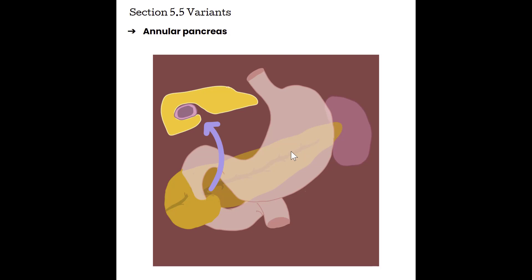In a normal pancreas, the head is just cradled within the C-loop. With the annular pancreas, instead of being cradled within that C-loop, the pancreatic tissue comes out and around and kind of gives the duodenum a big hug. Normally the head would end at the duodenum; in the case of the annular pancreas, it wraps around the duodenum and that can cause stricture within the duodenum, causing issues with how the stomach empties and how well the intestines work.